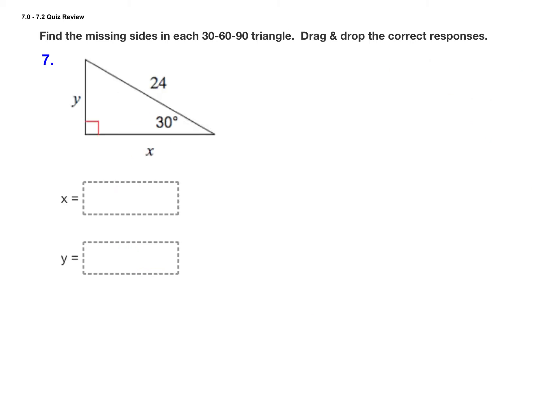In this next 30-60-90 degree triangle, the hypotenuse is given as 24. We need to find the short leg first, which is the leg opposite the 30 degree angle. Remember that the hypotenuse is 2 times the short leg, so 24 equals 2 times y.